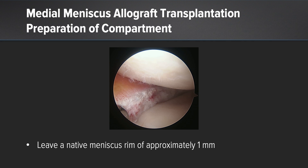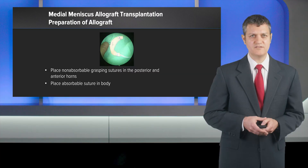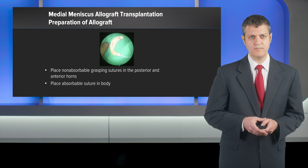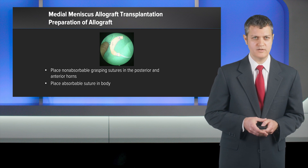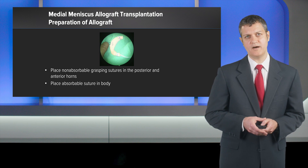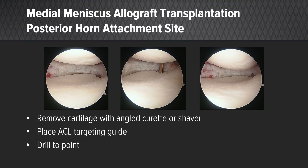The first step: I leave about a one-millimeter rim of native meniscal tissue, and that's what I'm depicting there. Next, I prepare the allograft. I place non-absorbable grasping sutures in the posterior horn and anterior horn, and I place an absorbable monofilament suture in the body. The next step is preparation of the posterior horn attachment site. I remove the cartilage there with an angled curette or a shaver. I place a rigid ACL targeting guide right where I want that meniscus to be secured, and I drill to the point.